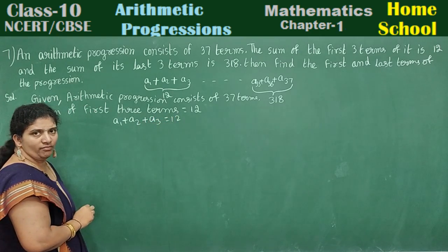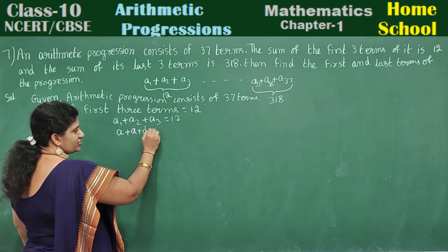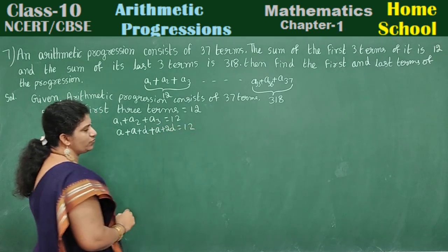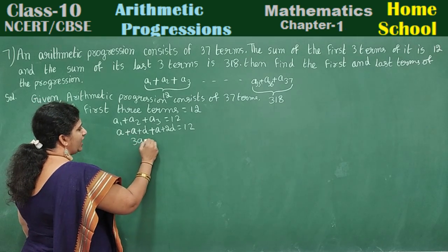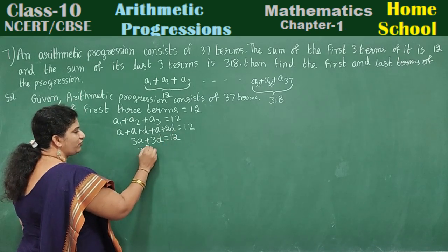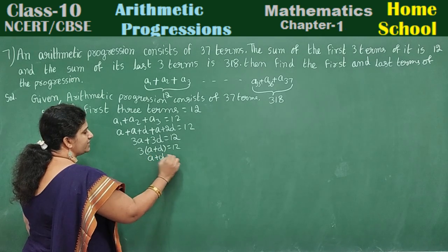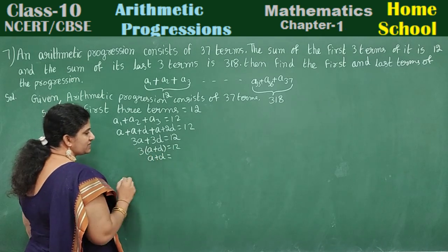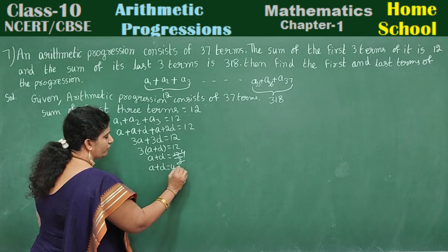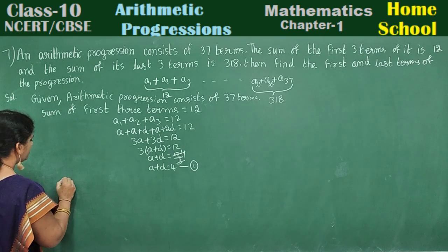Write this in general form. a1 can be written as a, a2 as a plus d, and a3 as a plus 2d, so the equation becomes a plus (a plus d) plus (a plus 2d) equals 12. Simplifying, 3a plus 3d equals 12. Taking 3 common, a plus d equals 4. Mark this as equation 1.